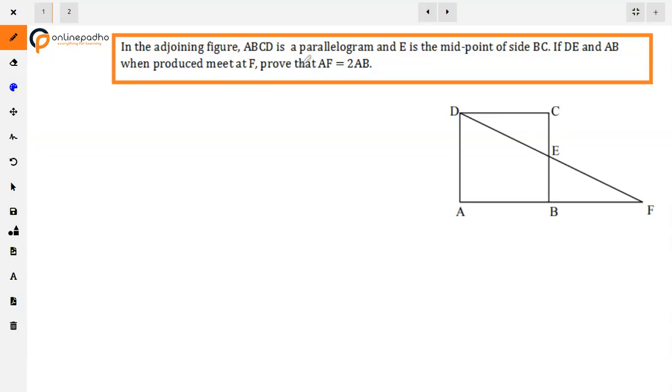The question is: In the adjoining figure, ABCD is a parallelogram and E is the midpoint of side BC. If DE and AB when produced meet at F, prove that EF is equal to 2AB.